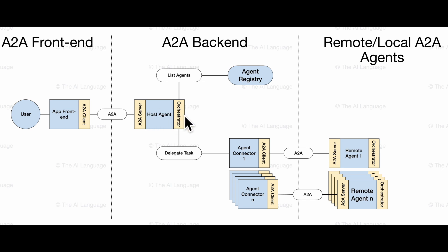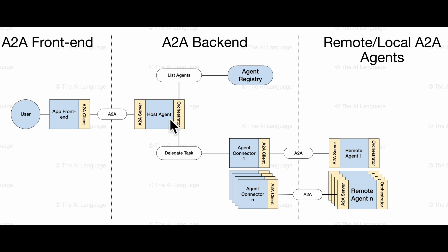We create an agent registry listing all the agents we want to use to resolve tasks. The orchestrator runs the list agents tool to get all agents with their descriptions and skill sets. It's also given the delegate task tool, which can help it delegate a task to another agent and receive a response. The orchestrator now knows it has a list of available agents and can delegate tasks. When it gets a task, it decides which agent to use based on agent capabilities, skills, description, and name, then calls delegate task for that agent.